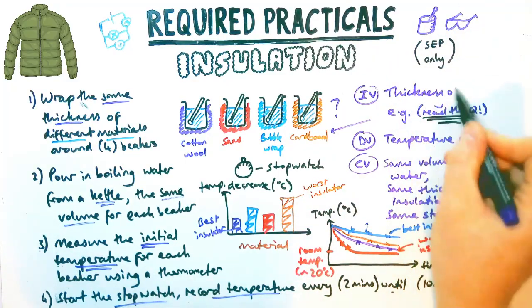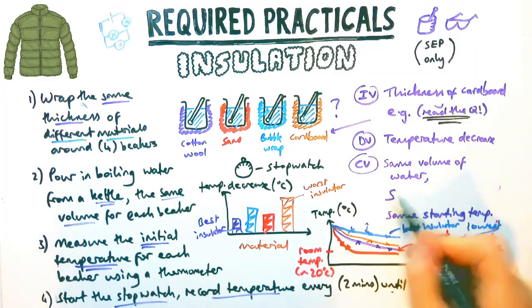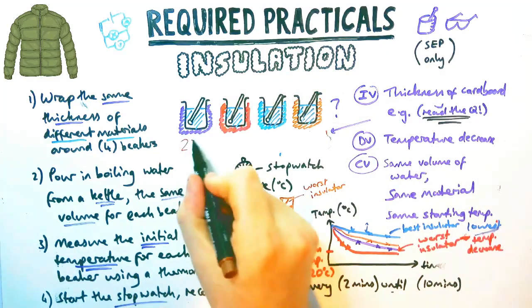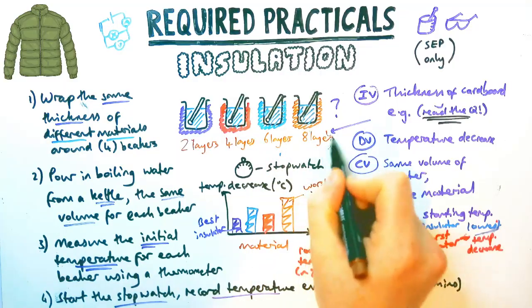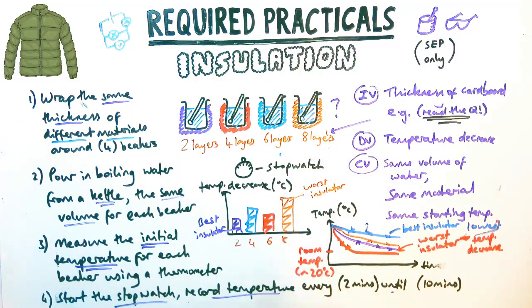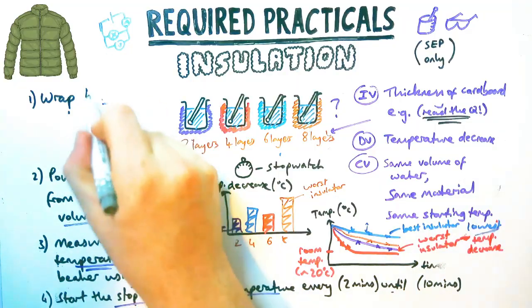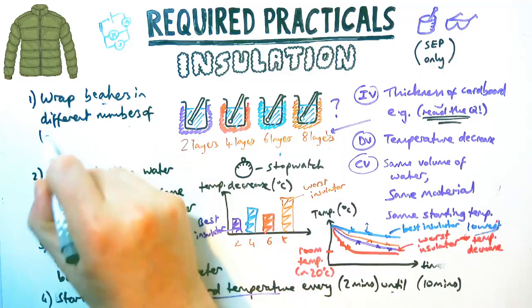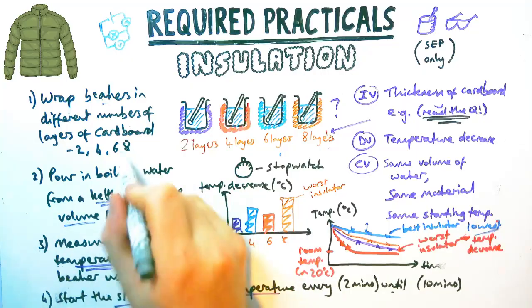Read the question carefully because there could be variants — instead of different materials, a question might give you one material and ask you to change the thickness. So instead of four different materials, it might say two layers of cardboard, four layers, six layers, eight layers and so on. You need to adapt your method accordingly, and on the graph you'd have a bar chart with different numbers of layers on the x-axis.